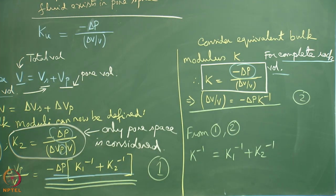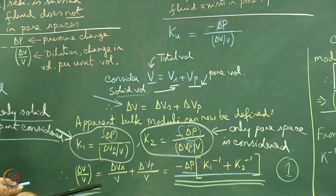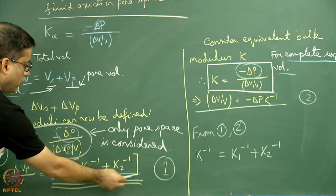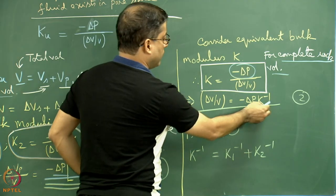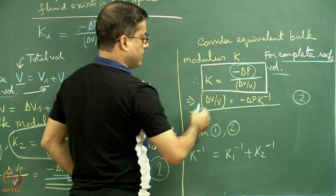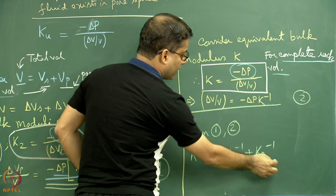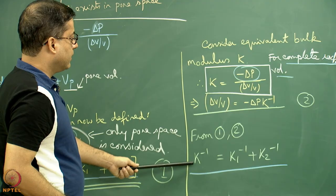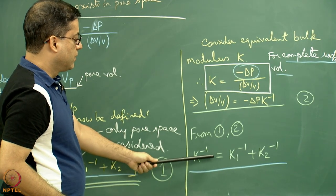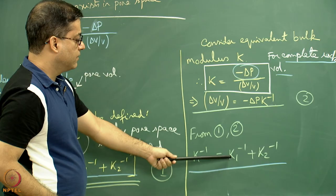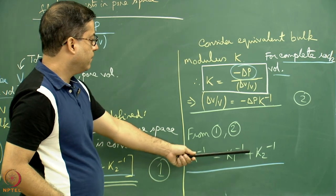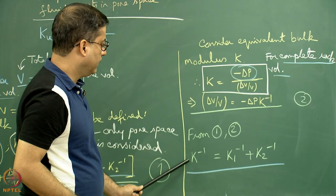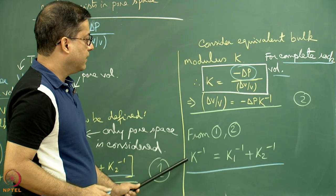From equations 1 and 2, we equate the two expressions for delta V by V. The minus delta P terms cancel out, and we finally get K inverse equals K1 inverse plus K2 inverse. Here K is the equivalent bulk modulus, K1 is the bulk modulus for the solid, and K2 is that for the pore space.